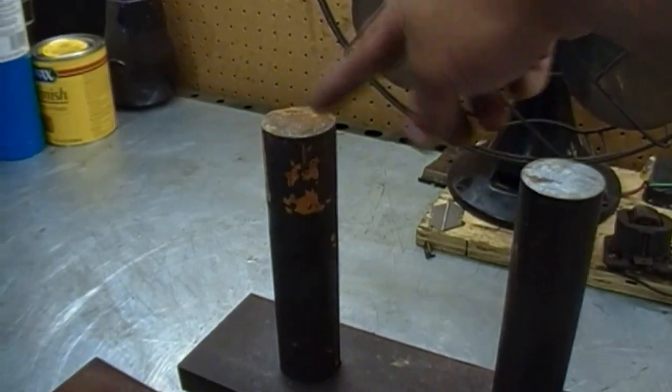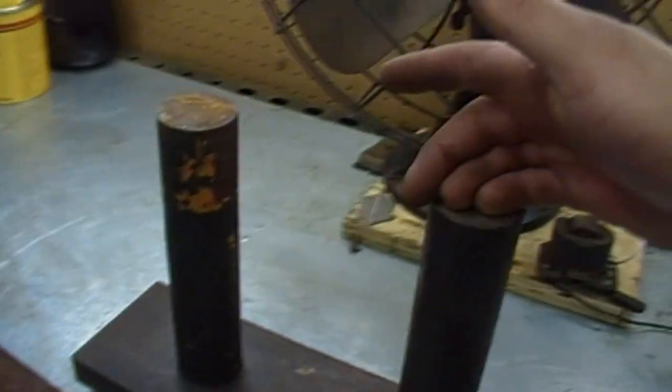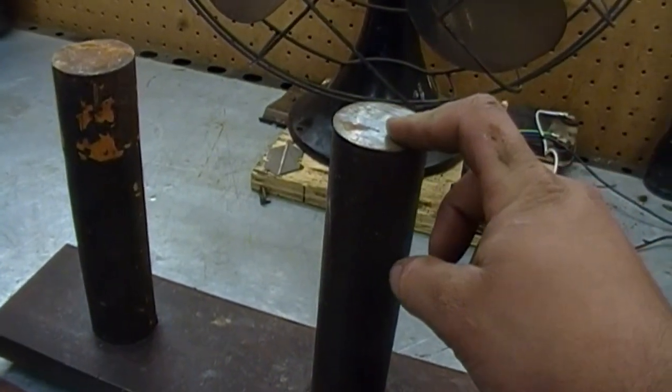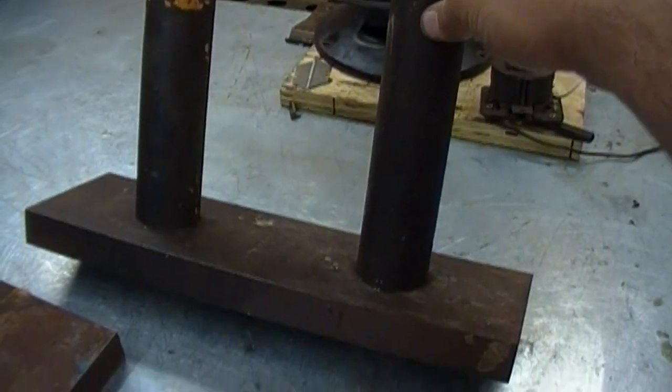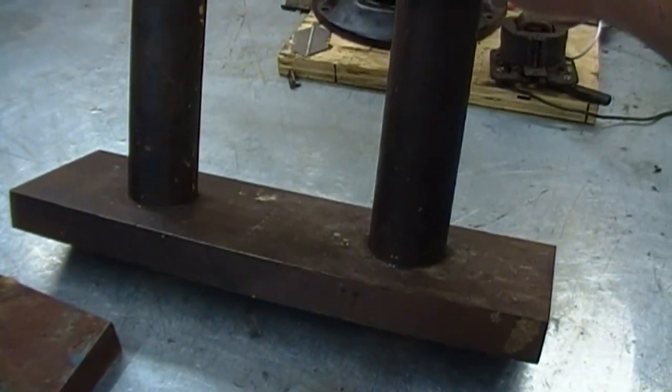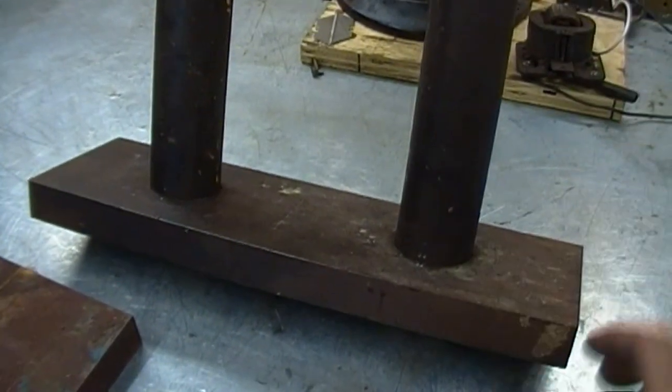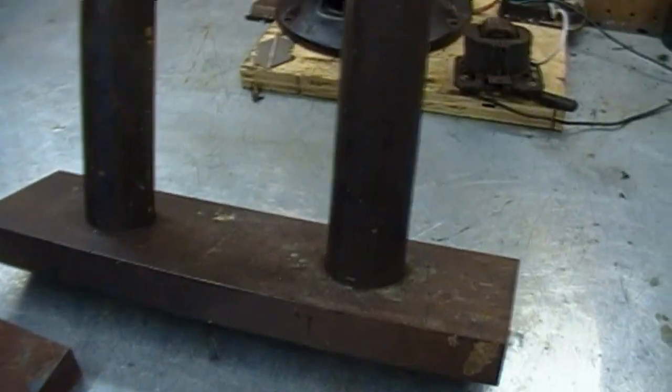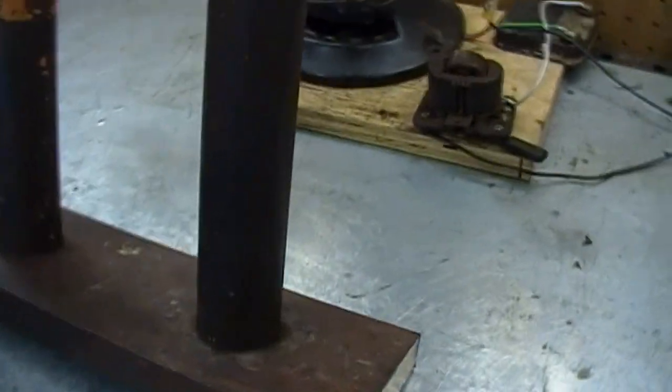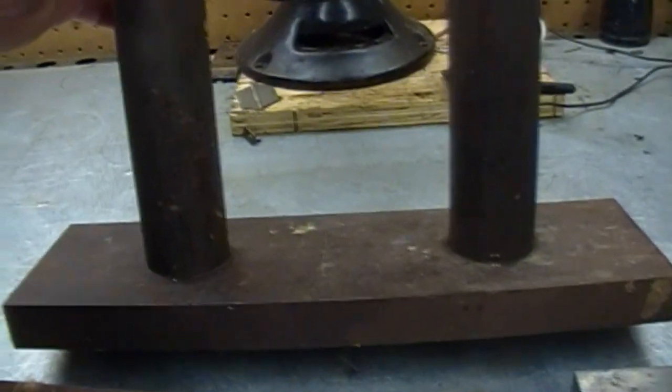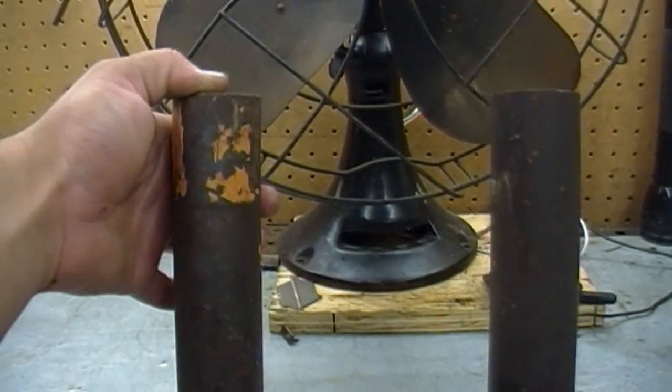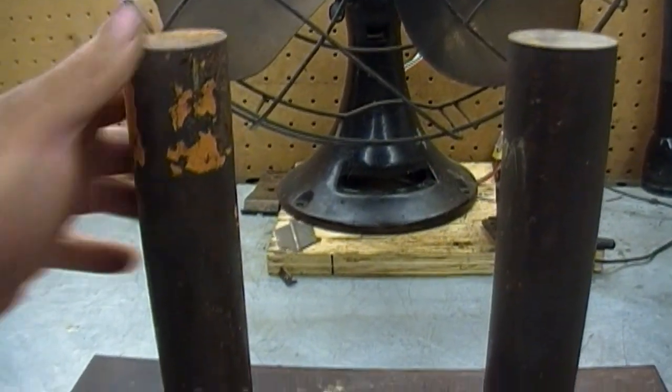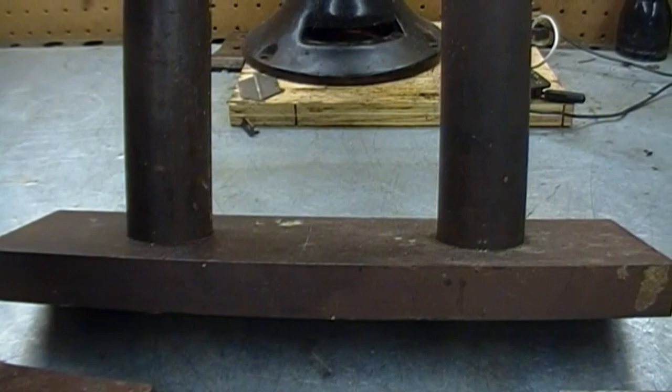There's the two cores here for the north and south coil. They're inch and a half diameter mild steel, and they're attached to the base, which is one inch by four inch mild steel. So from what I've been able to gather, you want to use as soft material as possible so it doesn't hold magnetism once you de-energize it.